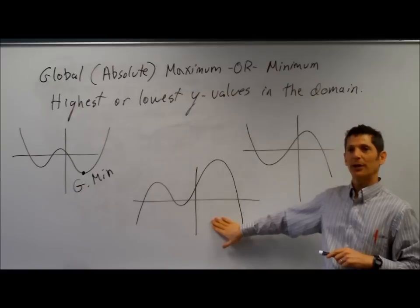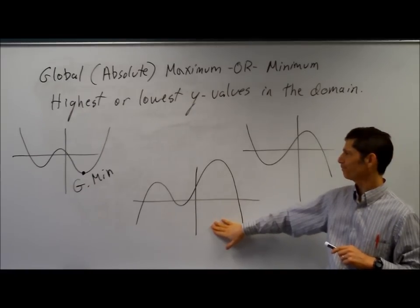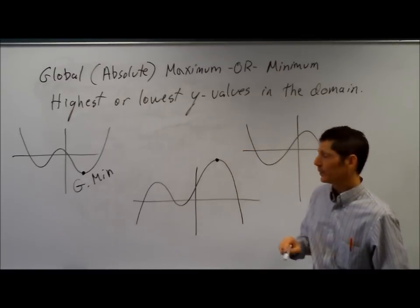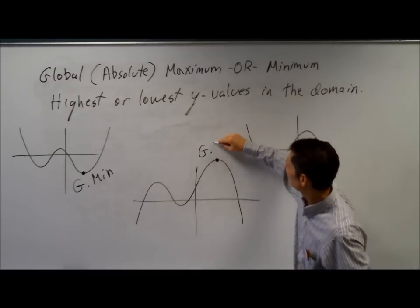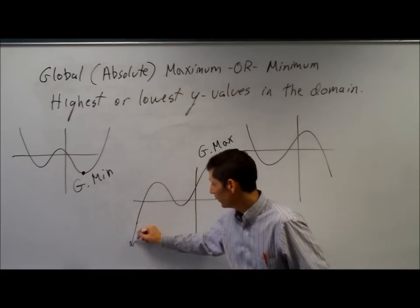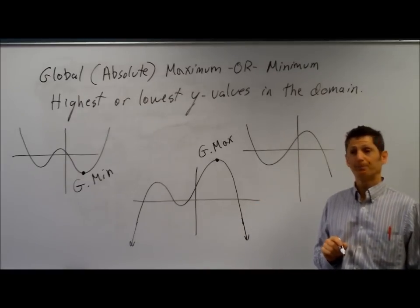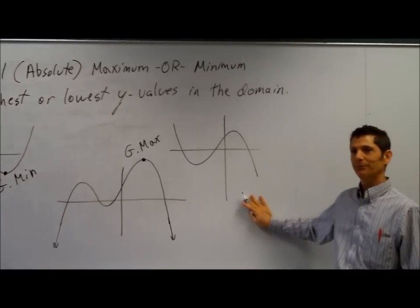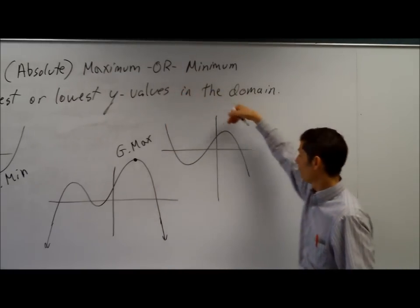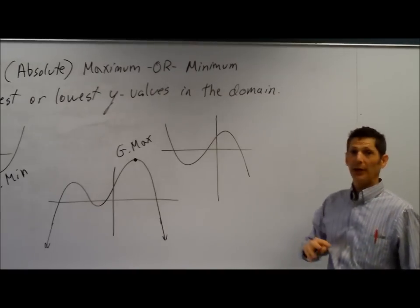How about this function right here — how many absolute or global minimums or maximums does it have? Just one: a global or absolute maximum right here. You have to assume the function keeps going downhill forever, so it has no absolute or global minimum. This last function? Neither — it keeps going up forever and keeps going down forever, so there is no highest or lowest point in the domain.